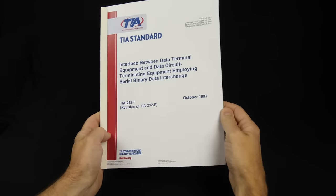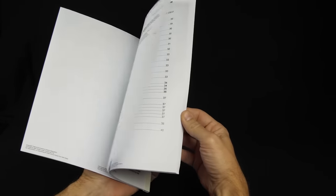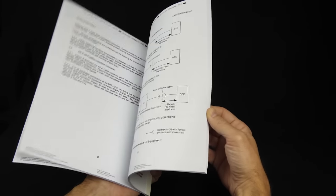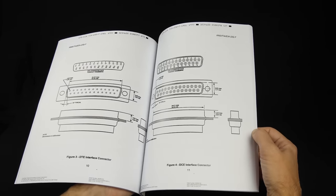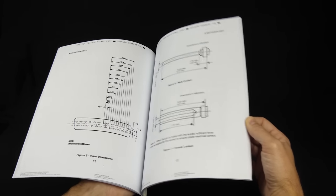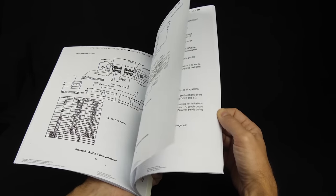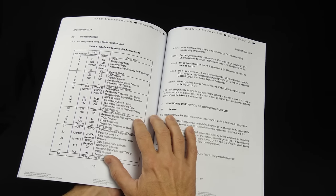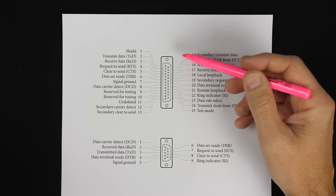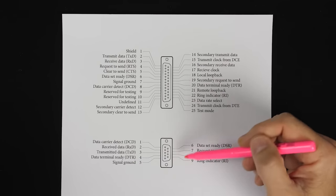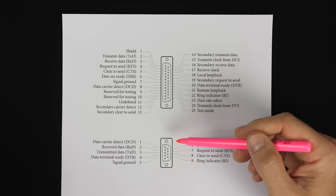As it turns out, much of what's in here isn't relevant to any modern or even any really widespread historical implementation of RS-232. For example, the standard requires this 25-pin connector. While the 25-pin connector was common at one point, even then most of the pins were unused. But the TIA-232 standard actually defines functions for almost all of the pins. Since most of these pins were never used widely, many manufacturers started using 9-pin serial connectors for cost savings.